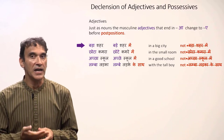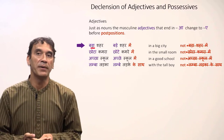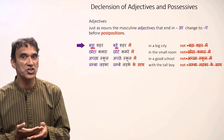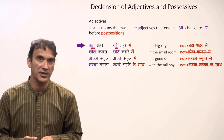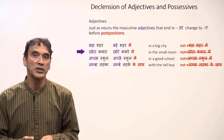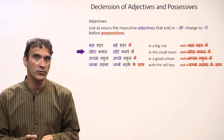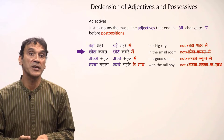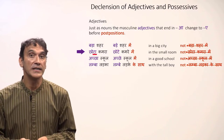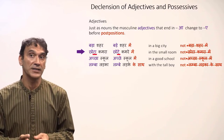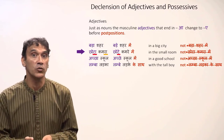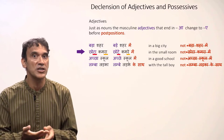'Bade shahar mein' means 'in a big city' — the 'ā' ending of 'bada' changed to 'e' in the oblique case with the postposition 'mein.' It's never 'bada shahar mein.' Another example: 'chota kamra' means 'a small room'; with the postposition 'mein' it becomes 'chote kamre mein' — 'in a small room.' The 'ā' of 'chota' became 'e,' and here both the adjective and noun end in 'ā,' so both change.